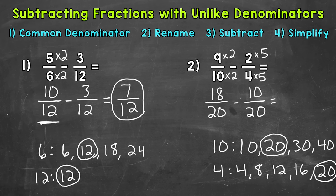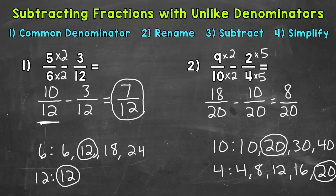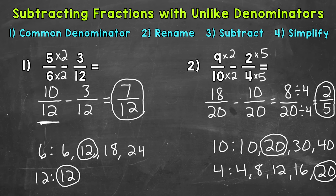Now we're ready to subtract. Subtract the numerators: 18 minus 10 is 8. Keep the denominator of 20. Our answer is 8 twentieths. Now 8 twentieths can be simplified. The greatest common factor between 8 and 20 is 4, so let's divide both by 4: 8 divided by 4 and 20 divided by 4 gives us a simplified answer of 2 fifths.